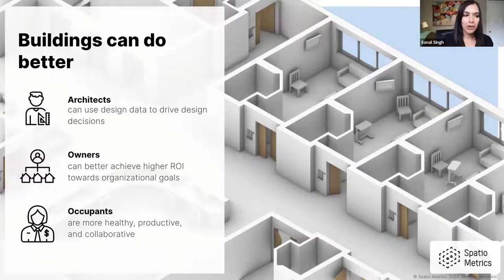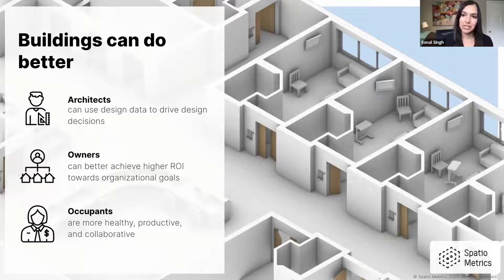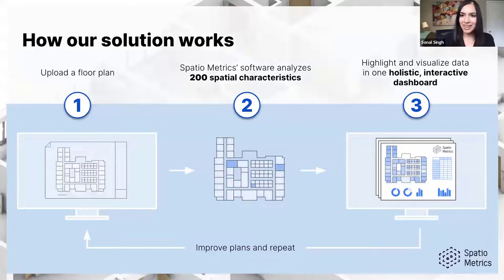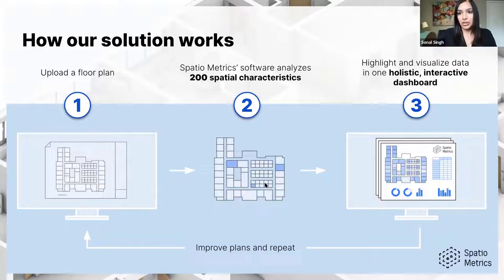Why do we care about the human factors of design? Because everybody wins. Architects can leverage design data to drive design decisions; owners can better achieve organizational goals; and ultimately all of us are more healthy, productive, and collaborative in these spaces. Research from companies like JLL shows there's almost a 100x bigger return on these aspects of design compared to even square footage or energy bills alone. Now, what does this actually look like in practice?